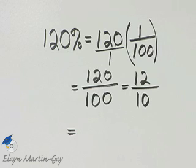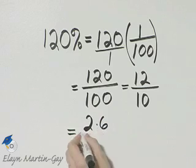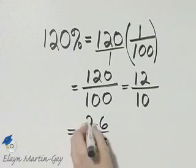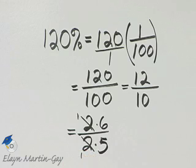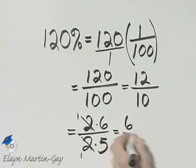Well, notice there's a common factor of 2. You can write 12 as 2 times 6, and you can write 10 as 2 times 5, and then divide out the common factors if you'd like to use that notation. I do have 6 fifths,